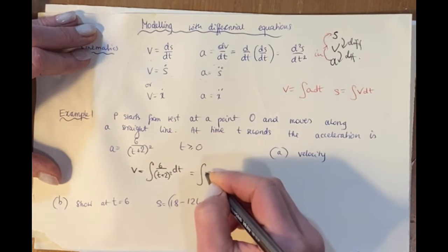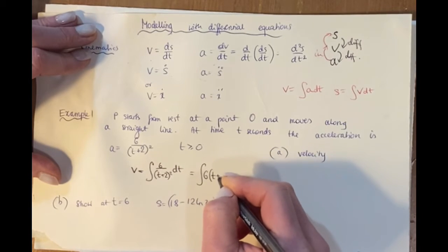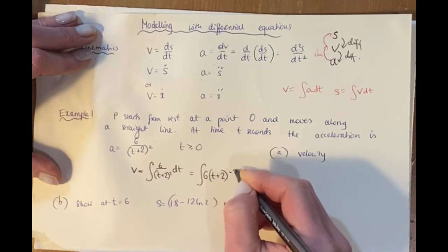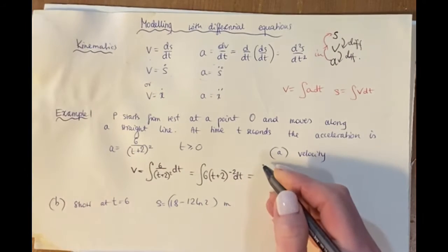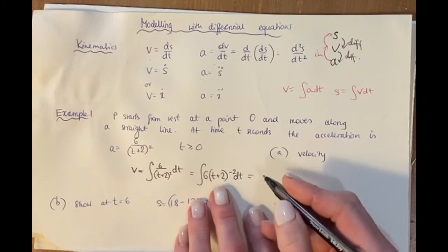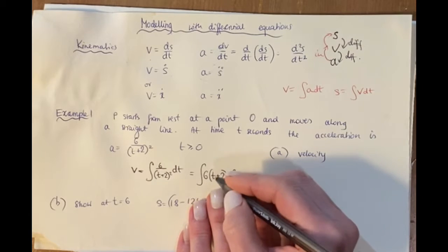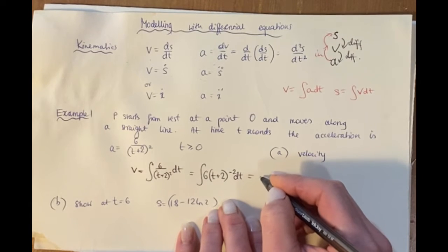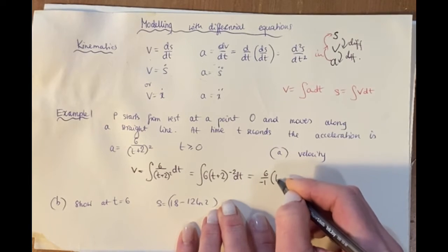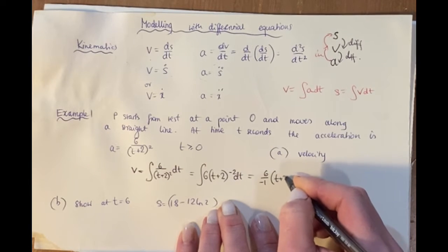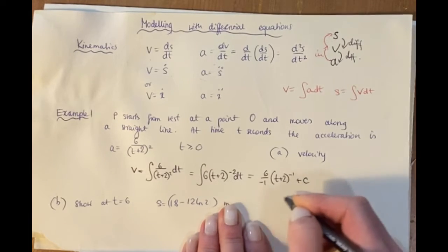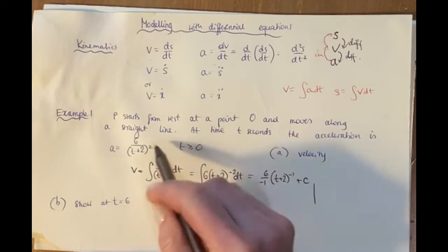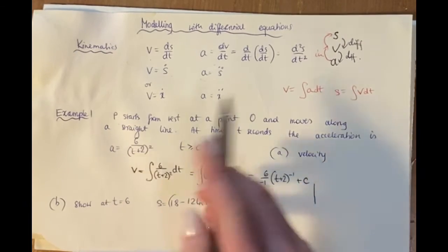So we integrate 6(t+2)⁻² dt. Adding 1 to the power and dividing by that power — since the bracket is linear — gives 6 divided by minus 1 times (t+2)⁻¹, plus c.